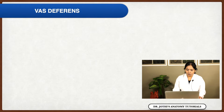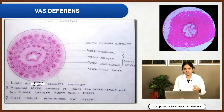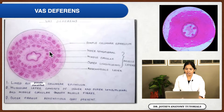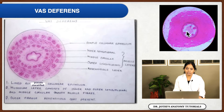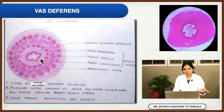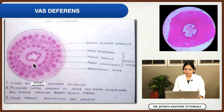The next structure is the vas deferens. Once again, it is a highly coiled tubular structure. From inner to outer, it is made up of a mucosa, then a muscular layer, then an adventitial layer. The mucosa is thrown into folds, giving a star-shaped lumen. The main difference between the vas deferens and the ureter is the lining epithelium — here it is pseudostratified columnar epithelium, whereas in the ureter it is transitional epithelium or urothelium.